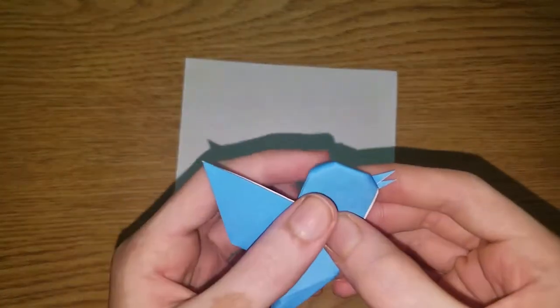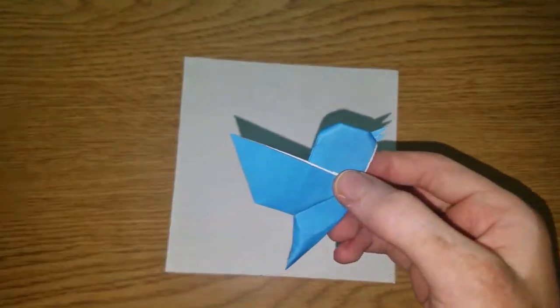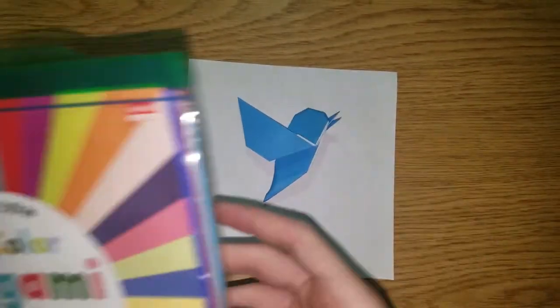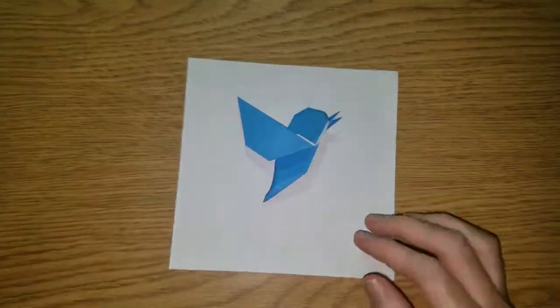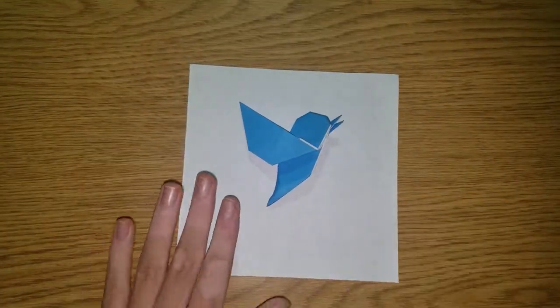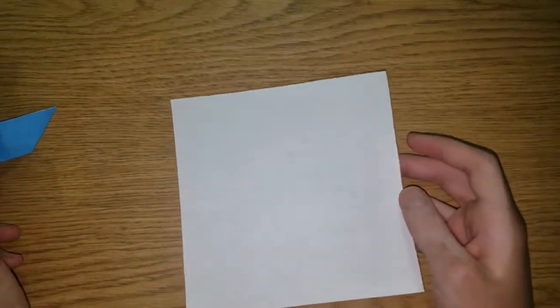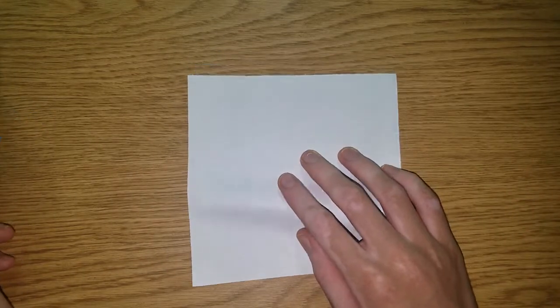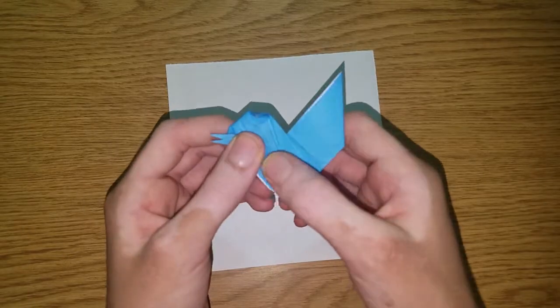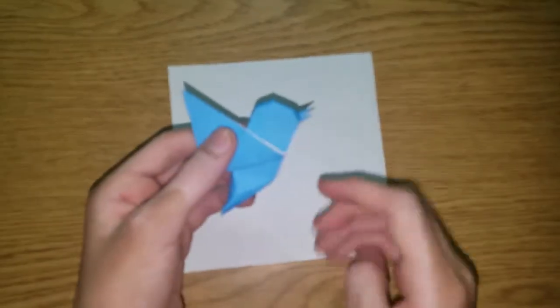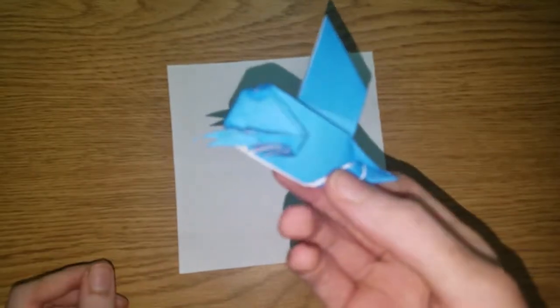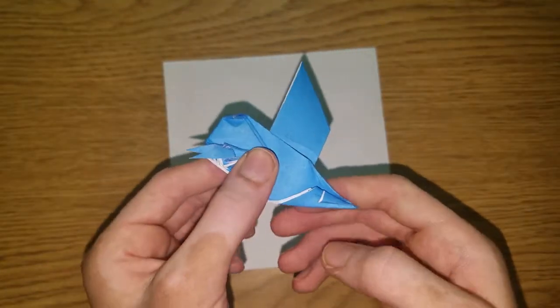This Twitter bird was folded from a 15 by 15 centimeter square of kami paper. In the video I'm going to be using this printer paper that is 5.5 by 5.5 inches, it's also square, and it's a super easy model. It only looks good at the front, the back doesn't look like the Twitter bird.